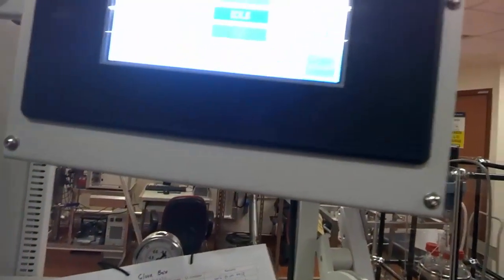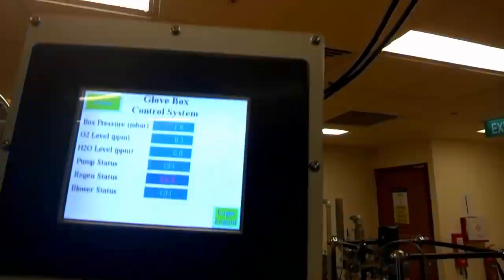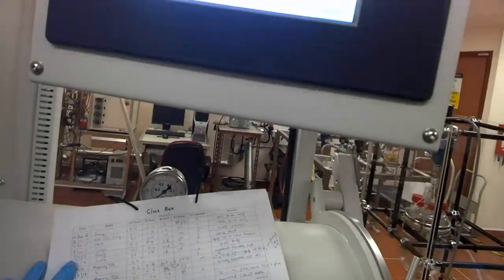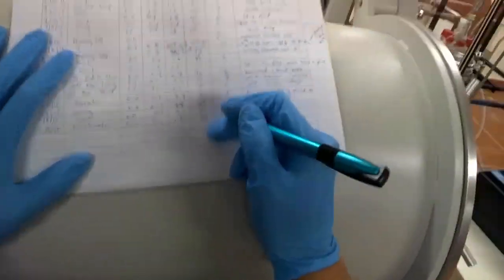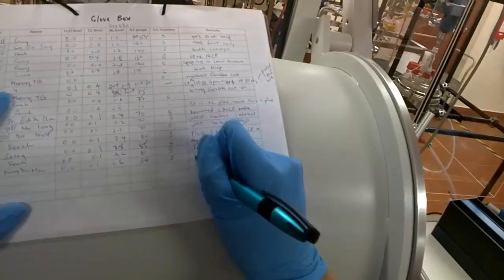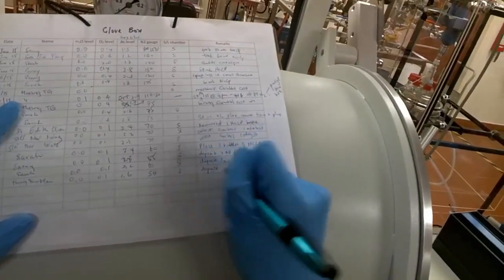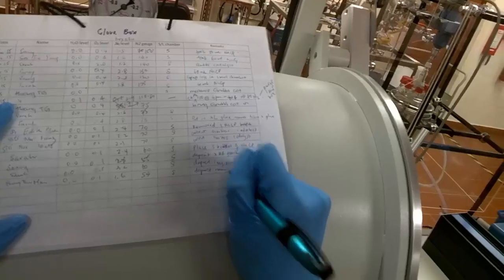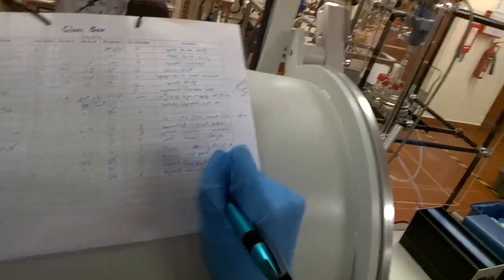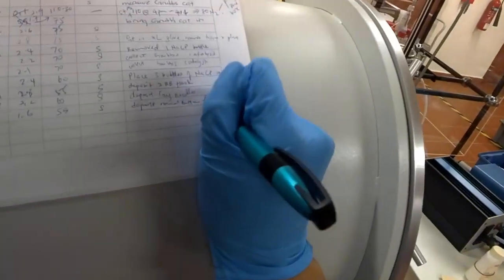How you get all this reading. You read from the top here. H2O is 0.0, 0.1. Pressure 1.6. And O2 gauge. You can read from the back of this glove box. Small or large antechamber. We use the small one here. And the activities we conducted, which is the deposition of the round bottom flask.